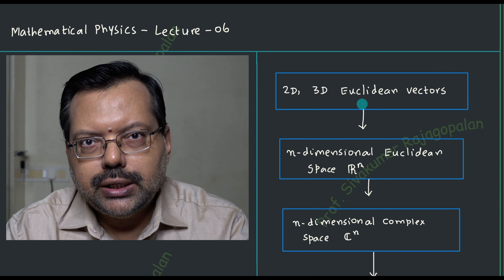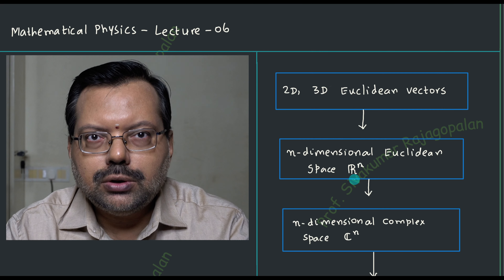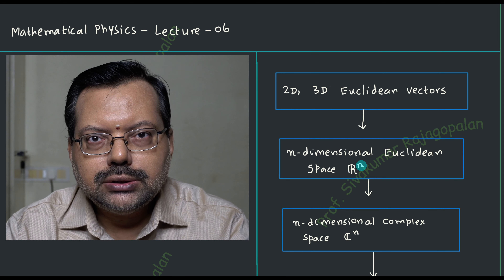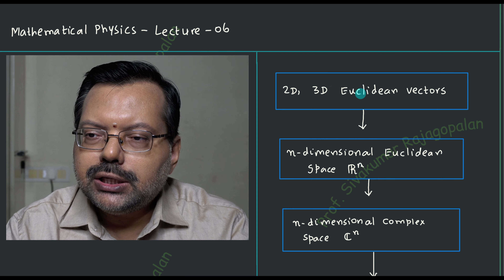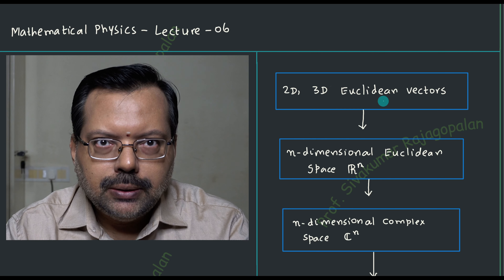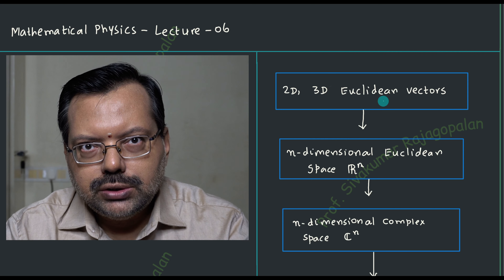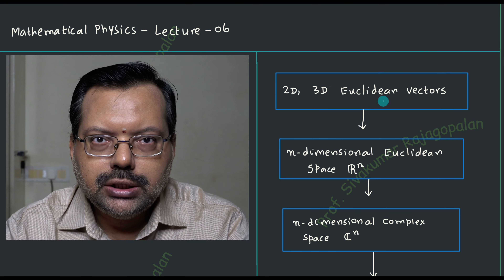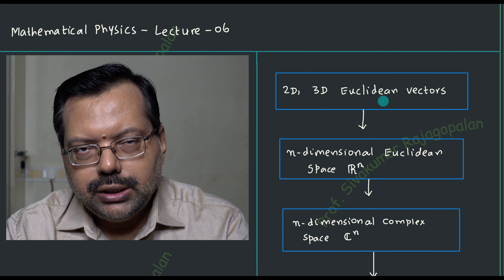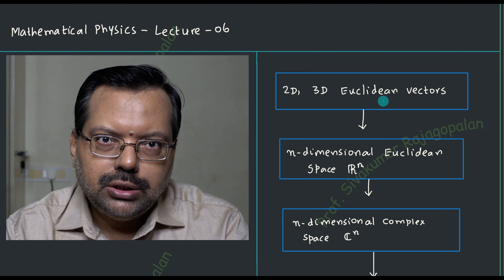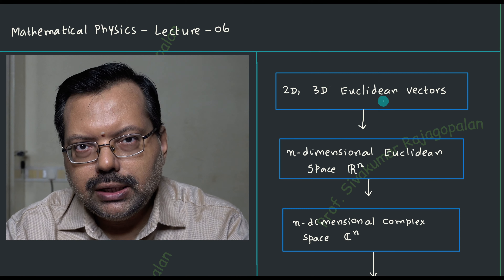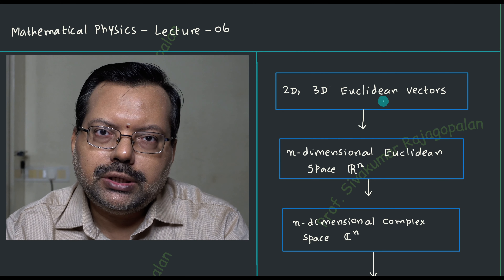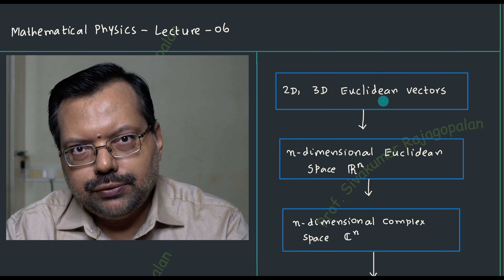The important point to be noted is that if you want to directly jump into the complex vector space, there may be some difficulty because the properties that are being explored for the Euclidean space are sometimes not valid for the complex vector space. This is the place where difficulty comes. You can always skip all the points and directly jump into learning the complex vector space, but the reason for the difficulty is that your familiar properties from Euclidean geometry may not be valid.